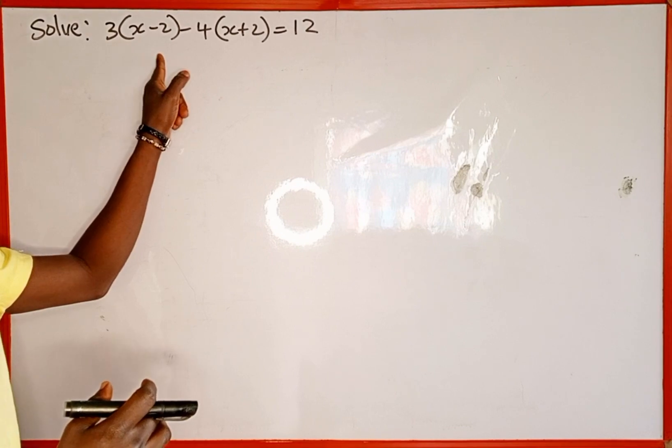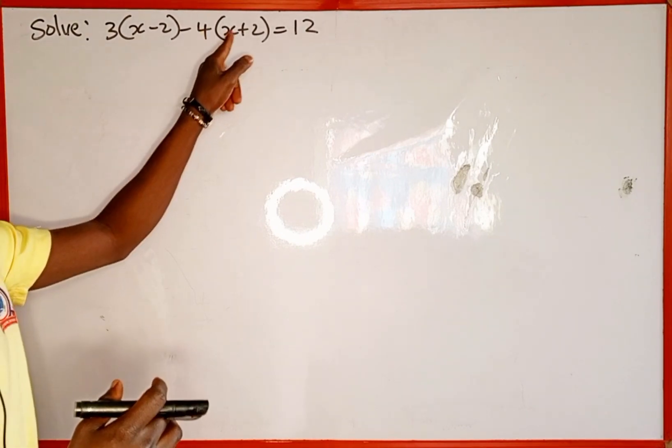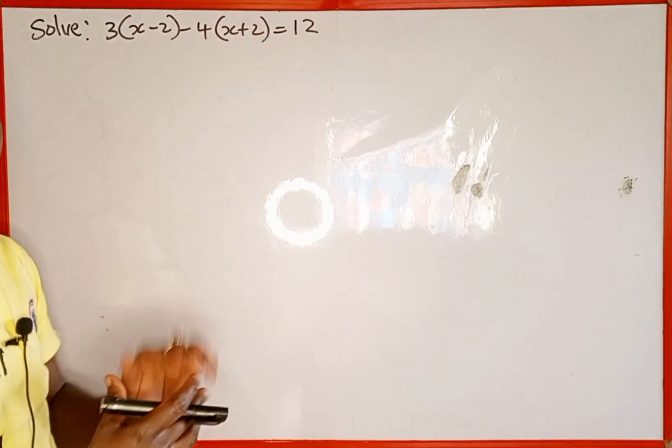3 into the bracket of x minus 2 minus 4 into the bracket of x plus 2 is equal to 12.